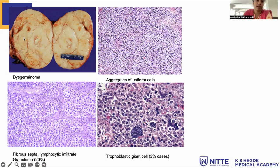On histopathology, lobules of tumor cells can be seen. These tumor cells are large but monomorphic. They have abundant vacuolated cytoplasm, and lobules are surrounded by fibrous septa which show lymphocytic infiltration. In 20% of cases, it can be associated with epithelioid cell granuloma. Here you can see monomorphic cells which are seen in lobules.